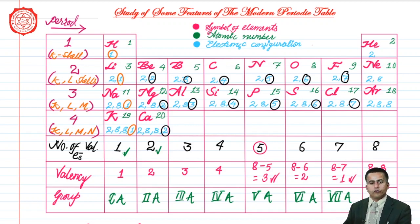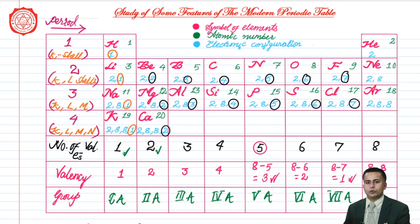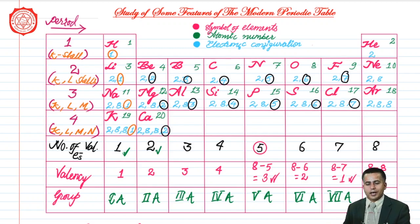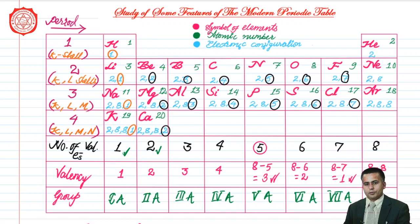This is how we can easily find the group number and period number of different elements. This is the pattern by which elements are arranged in order of increasing atomic number in the modern periodic table. For higher classes you will study beyond this, but for your school level this is what the syllabus covers. I hope it has been very clear to you from this video — thank you.